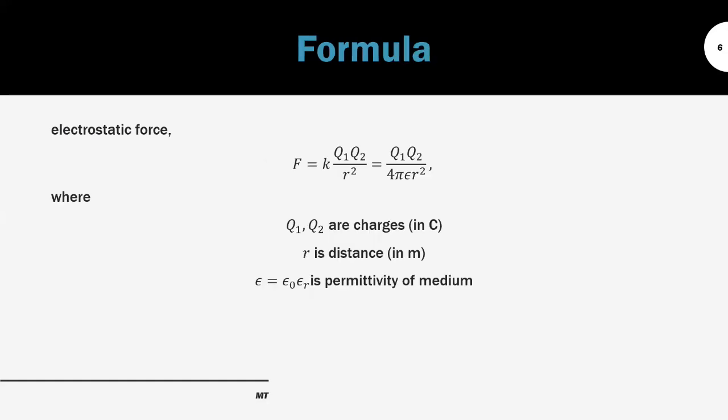Next, we look at the formula. The electrostatic force equals the constant k multiplied by q1 times q2, divided by r squared — which follows from the definition of Coulomb's Law. The constant k equals 1 over 4-pi-epsilon. Here, q1 and q2 are the charges measured in coulombs, and r is the separation distance in meters.